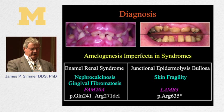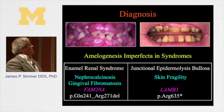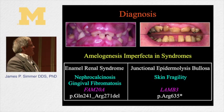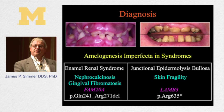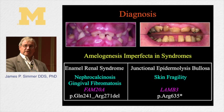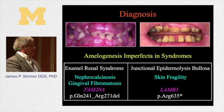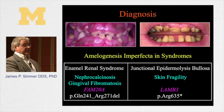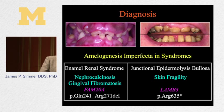The nephrocalcinosis wasn't known originally. The person's chief complaint was their dental problems. That led to a genetic investigation, which found this mutation in this gene. Then they had an ultrasound of their kidneys, and that's how the diagnosis of nephrocalcinosis was made. Now they are on medication and a change of diet to try to minimize those effects. This is also a syndromic form of amelogenesis imperfecta associated with skin fragility — these people form blisters and bullae, and their skin tends to peel off easily. This is caused by a defect in a gene encoding a basement membrane protein, laminin.